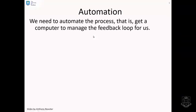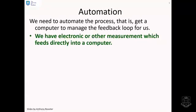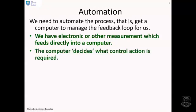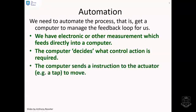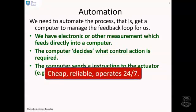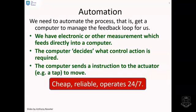Automation. We need to automate the feedback process - that is to get a computer to do the job for us. We've got electronic or other measurements available, and these can feed directly into a computer. The computer can then decide what control action is required and sends an instruction to the actuator, which could be a tap or something else, to move appropriately. This is relatively cheap, reliable, and the key thing is it operates 24-7. It doesn't get tired and it's much less affected by hostile environments.